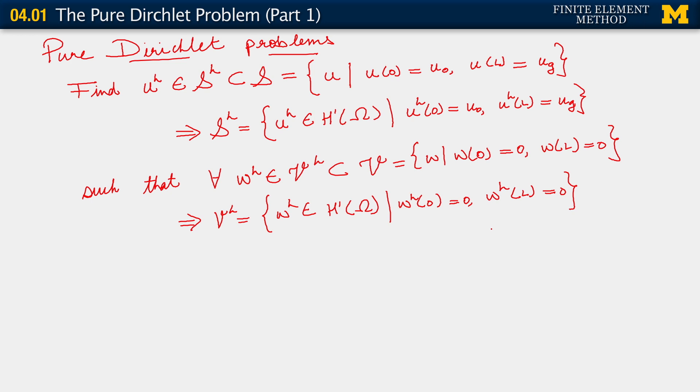So wherever we have Dirichlet data, the weighting function satisfies the homogeneous Dirichlet condition. And this implies for us that v_h consists of all functions w_h also belonging to the space H^1 on omega such that w_h of 0 equals 0 and w_h at l also equals 0.